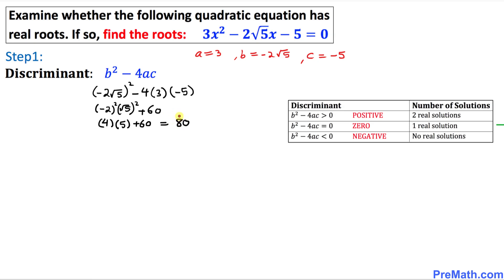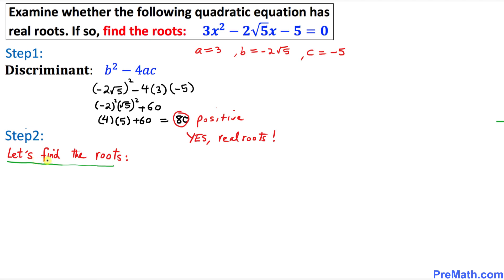Since the value of the discriminant turns out to be 80, which is a positive number, we can compare using the chart. Whenever the discriminant is positive, we always get two real solutions. That means yes, we have real roots, and we are going to get real roots. Now in our next step, we are going to find the roots or solutions of this given quadratic equation.